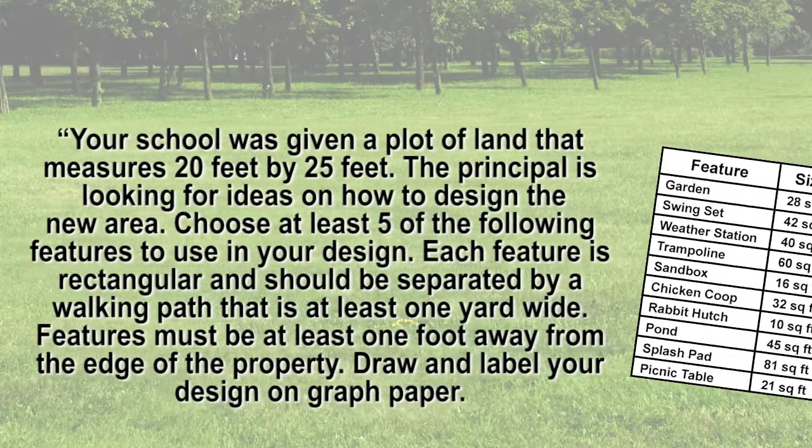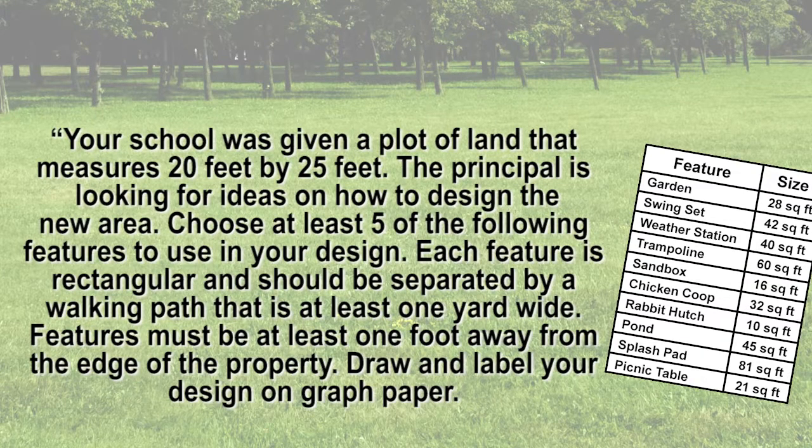Choose at least five of the following features to use in your design. Each feature is rectangular and should be separated by a walking path that is at least one yard wide. Features must be at least one foot away from the edge of the property. Draw and label your design on graph paper.